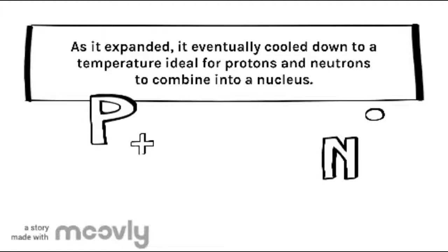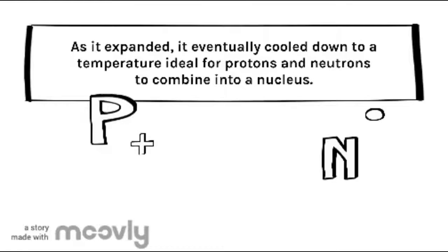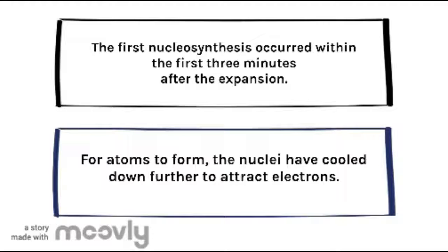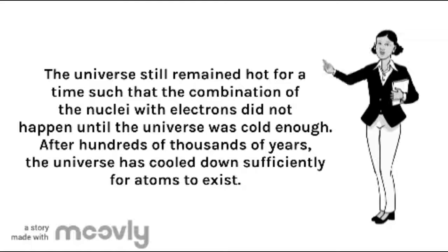As it expanded, it eventually cooled down to a temperature ideal for protons and neutrons to combine into a nucleus. Nucleosynthesis is the process of producing the nucleus. The first nucleosynthesis occurred within the first three minutes after the expansion. For atoms to form, the nuclei cooled down further to attract electrons, though the universe remained hot for a time such that the combination of nuclei with electrons did not happen until it was cold enough.